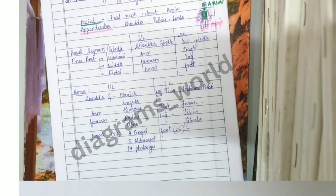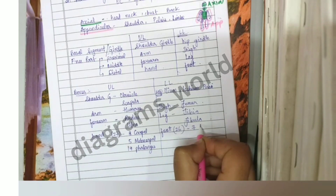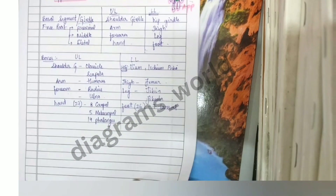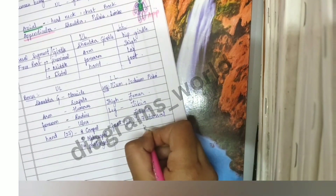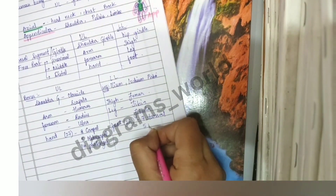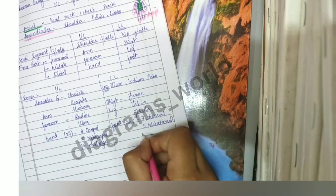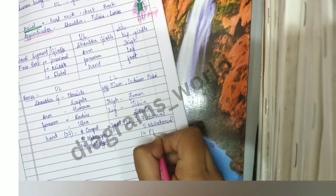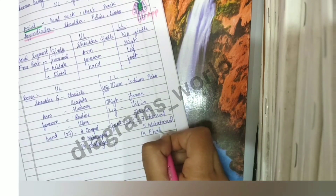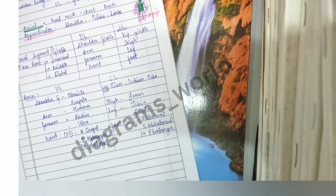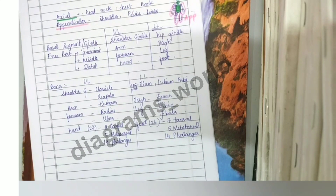In the foot, there are seven tarsal bones, five metatarsal bones, and 14 phalanges. In the big toe we have only two phalanges, and in all the other toes we have three phalanges each.